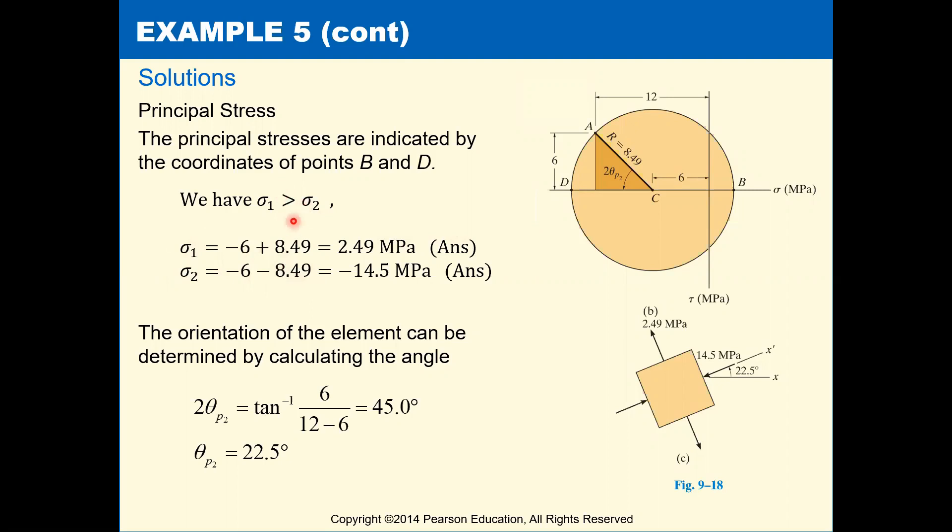Again, because sigma 1 is greater than sigma 2. And so you get sigma 1 is 2.49 megapascals, which corresponds to this point B. And then sigma 2 is negative 14.5 megapascals, which corresponds to this point D.